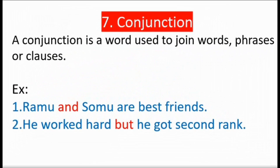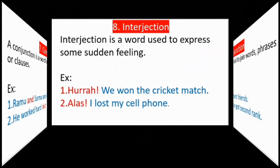Seventh — conjunction. Note: the second 'n' in conjunction is silent; we don't pronounce it like 'conjunctioN.' A conjunction is a word used to join words, phrases, or clauses. Example: 'Ramu and Somu are best friends.' Ramu and Somu are separate nouns joined by 'and' — 'and' is the conjunction. Second: 'He worked hard but he got second rank.' Two stages connected — 'but' is the conjunction here.